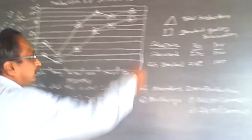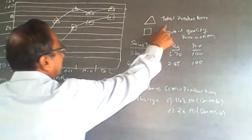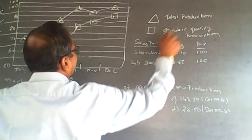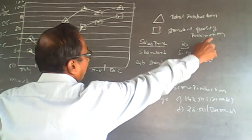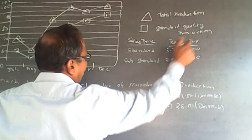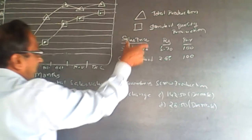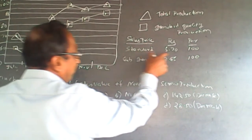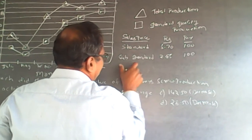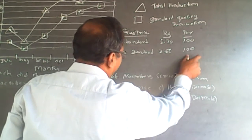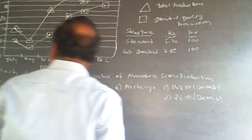The upper line indicates the total production. The lower line indicates the standard quality production. The sales price is given as: standard will be 5.70 per 100, and substandard will be 2.85 per 100.